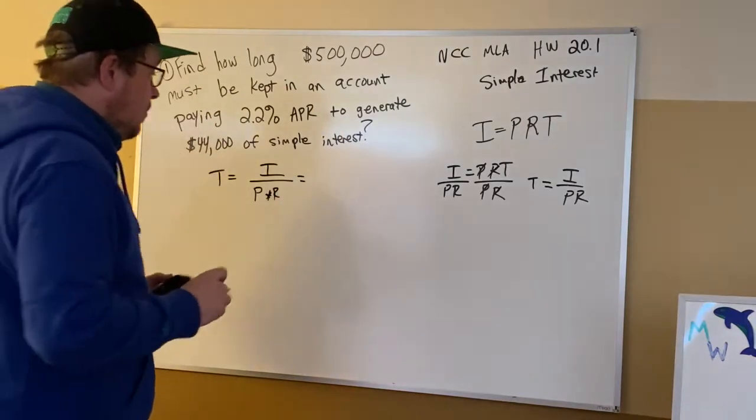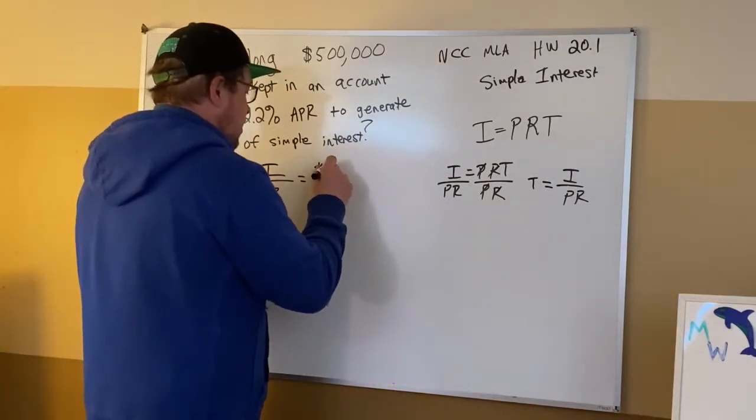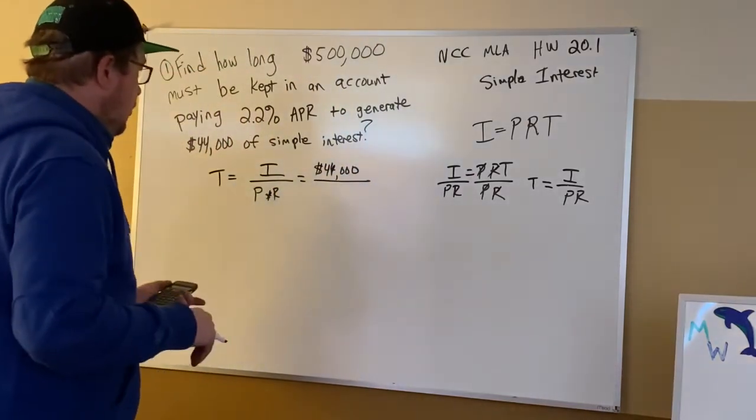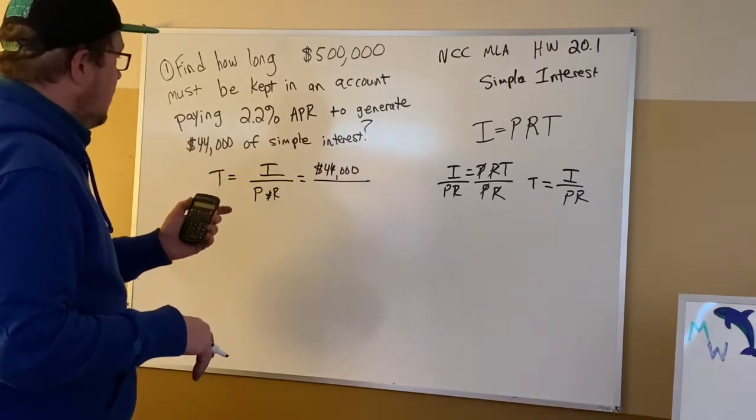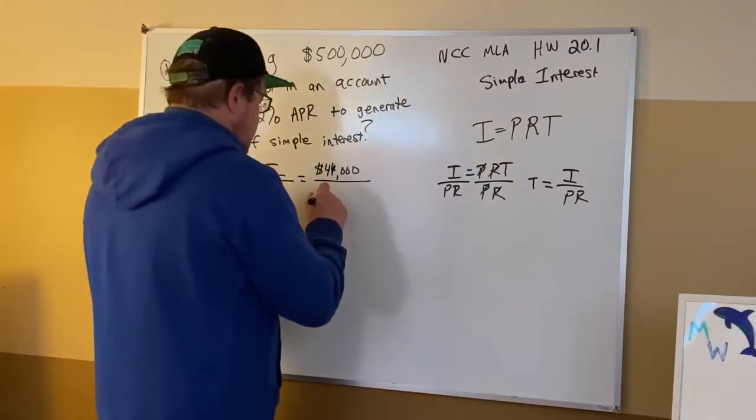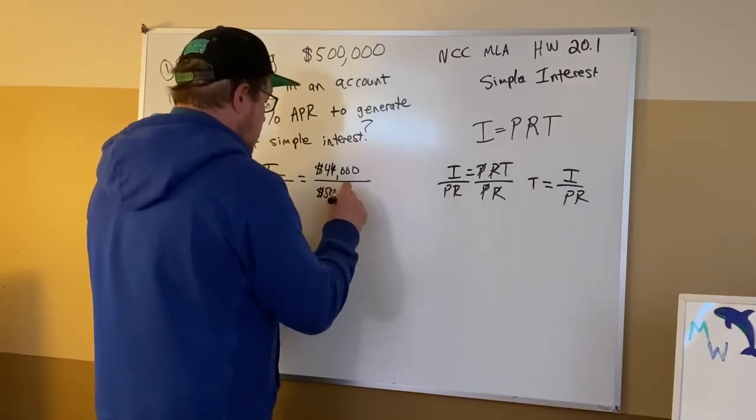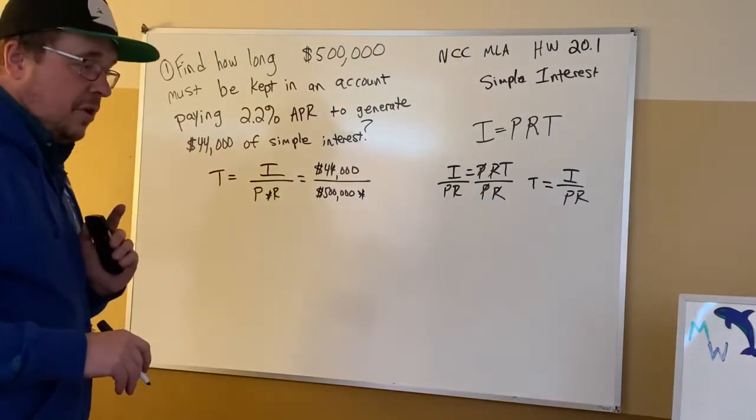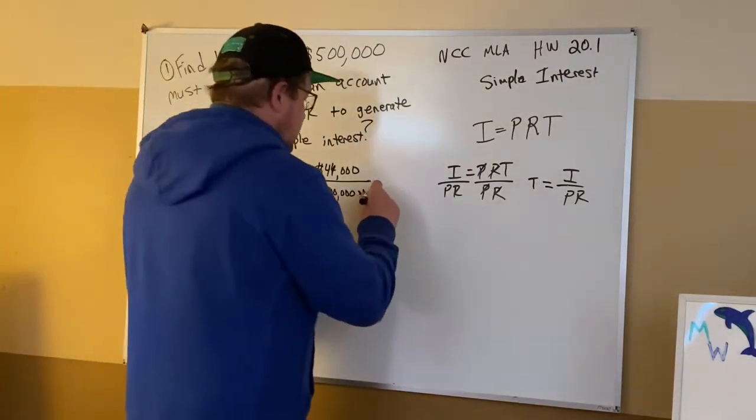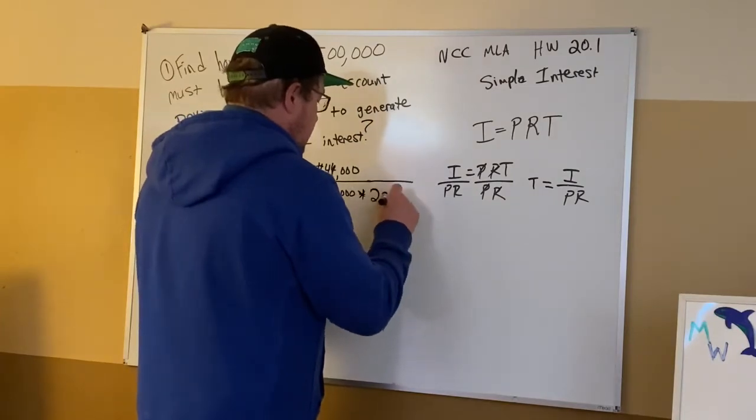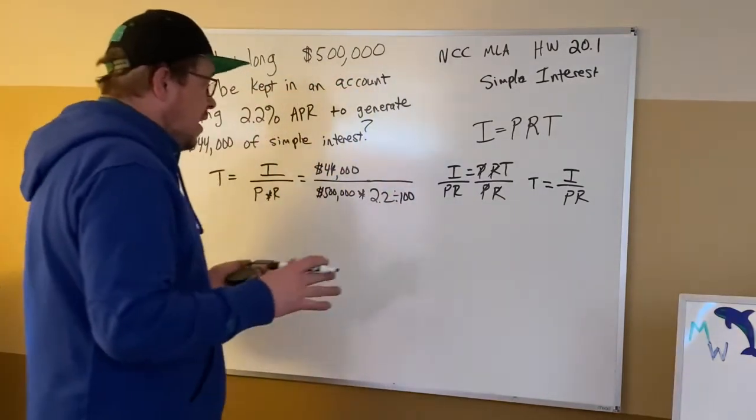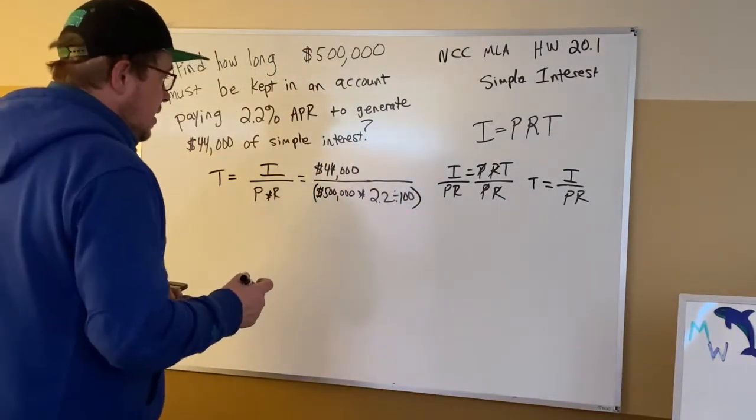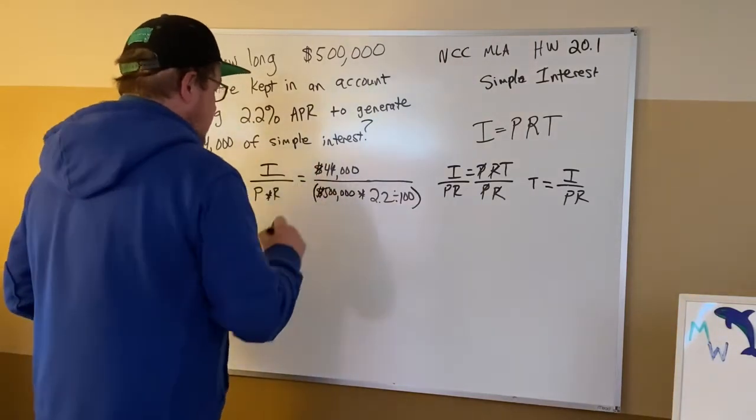So the interest is $44,000, so I'll put that right here for the I. And I need to divide that by both of these things: the principal of $500,000, and also in the denominator I have 2.2%, which is going to be 2.2 divided by 100. Now what I think is a good idea is to put these in parentheses, because now I can see that I'm going to cancel the dollar signs and I'll get my time.